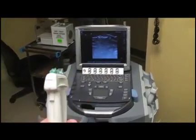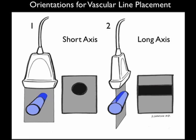Notice the probe marker there to the side of the probe. Here are the orientations we can place the high-frequency probe in relation to the internal jugular vein for vascular line placement. To the left, we see the short axis configuration with the probe perpendicular to the vessel — the vessel will appear on the ultrasound screen as a circle, cut end-on. To the right, we see the long axis configuration, with the vessel appearing as a tubular structure.